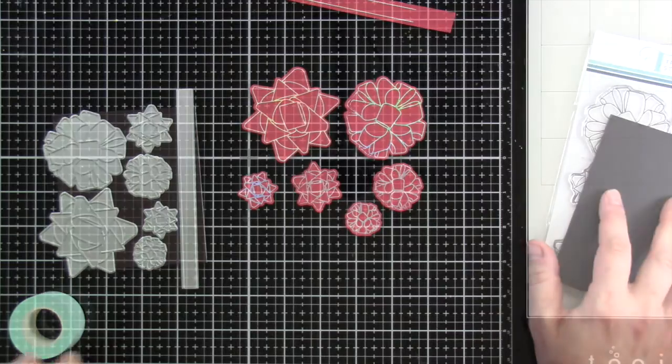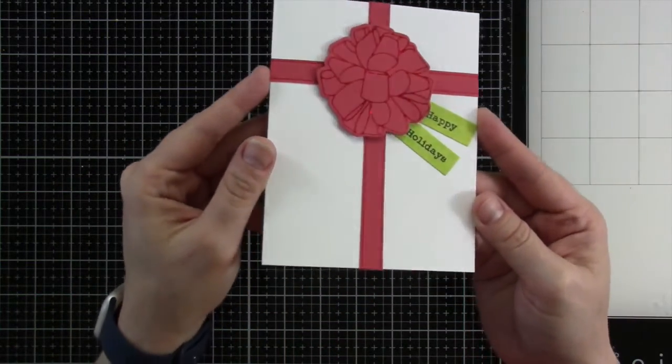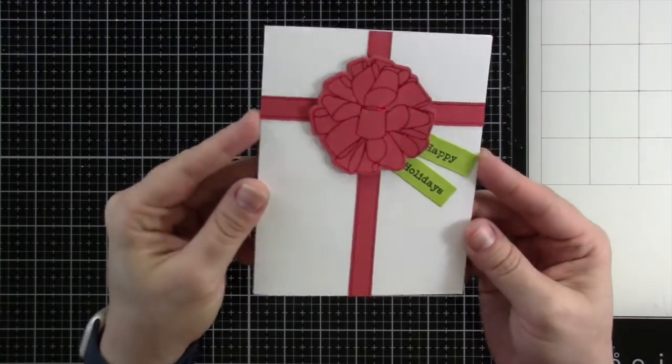I love how those look, and now let me share a card with you that I made using the Big Bows Little Bows Foiling Plate. I love how this turned out as well.